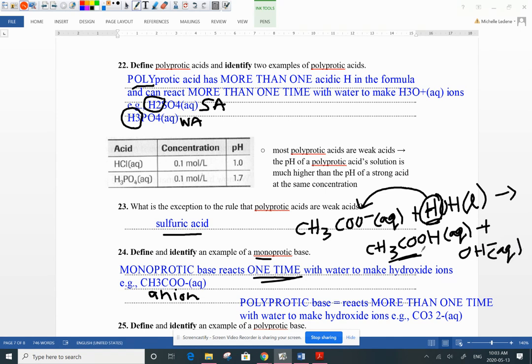So there's only one reaction there, right? If you could take this guy and react him one more time with water, well, you can't make, there's no such thing as CH3 COOH2 plus. That doesn't exist. So there's not going to be one more reaction with water. It's just one time reaction with water to make hydroxide.